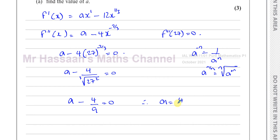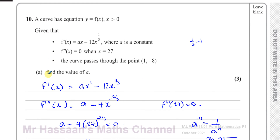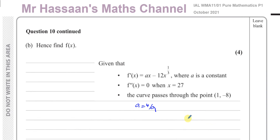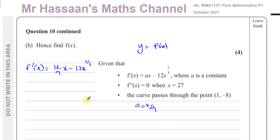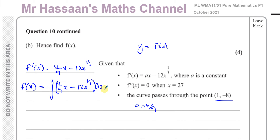Therefore a is equal to 4 over 9. That's part a done. Part b says to find f(x). We now know that f'(x) is equal to 4 over 9 x minus 12x to the power of a third. We also know the curve passes through the point (1, -8). So if we integrate f'(x) we'll get f(x) — that's the integral of 4 over 9 x minus 12x to the power of a third with respect to x.